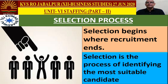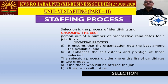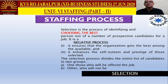Selection is the process of identifying and choosing the best person out of a number of prospective candidates for a job. It is a negative process — remember this, as it can be asked in objective-type questions. Recruitment is positive because we try to increase the number of applicants, while selection is negative because at every step we keep reducing the number of applicants to get the best one. Selection ensures the organization gets the best out of total applicants.